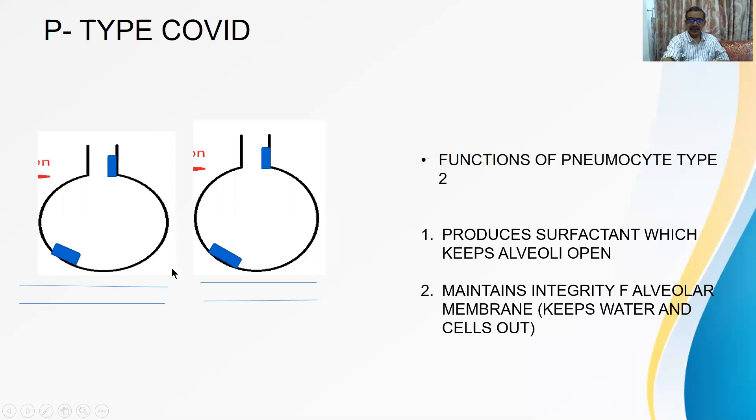Next function here is maintaining integrity of alveolar membrane. This alveolar membrane is very thin. It is surrounded by a very flat thin layer of pneumocyte type 1. Now this pneumocyte type 2 is important in maintaining integrity. If pneumocyte type 2 is not functioning well, the integrity will be lost. Means inside things will come out, outside things will go inside. And both these things are important for this P-type COVID.